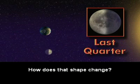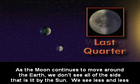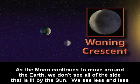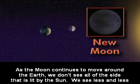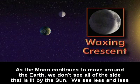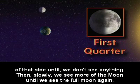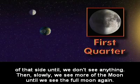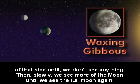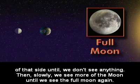How does the shape change? As the moon continues to move around the Earth, we don't see all of the side that is lit by the sun. We see less and less of that side until we don't see anything. Then slowly, we see more of the moon until we see the full moon again.